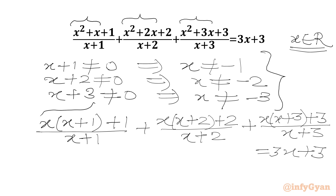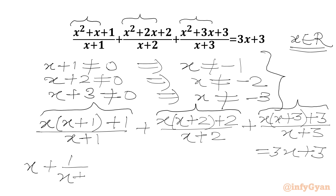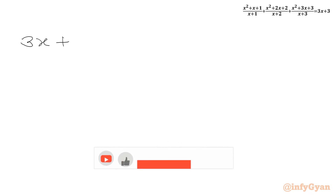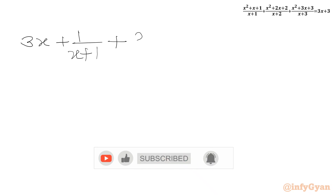Now we are going to split our numerators with respect to their respective denominators. From the first term we write x plus (x plus 1) over (x plus 1). Similarly from the second term we write x plus (x plus 2) over (x plus 2). And from the third term we write x plus (x plus 3) over (x plus 3). So on the LHS we get 3x plus 1 over (x plus 1) plus 2 over (x plus 2) plus 3 over (x plus 3).